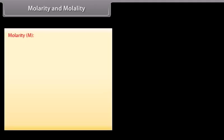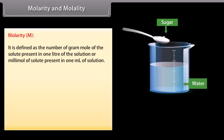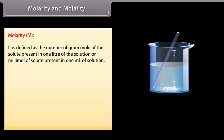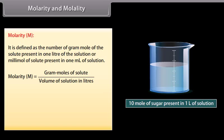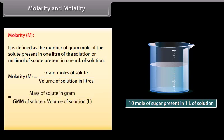Molarity is defined as the number of gram moles of the solute present in one liter of solution, or millimoles of solute present in one milliliter of solution. It is represented by M. Mathematically, M = W_B (in grams) / (gram mole mass of B × volume of solution in liters). A solution having molarity one is called a molar solution.